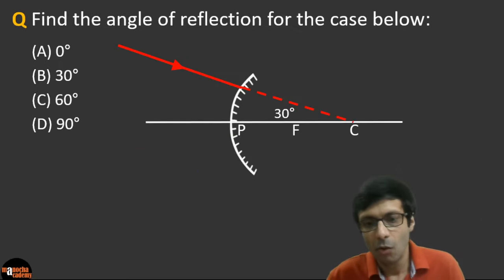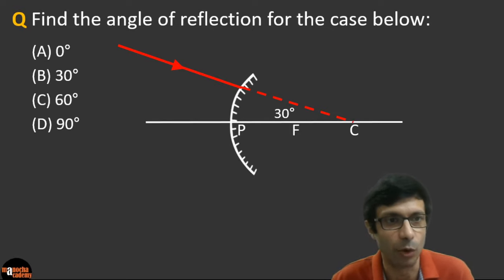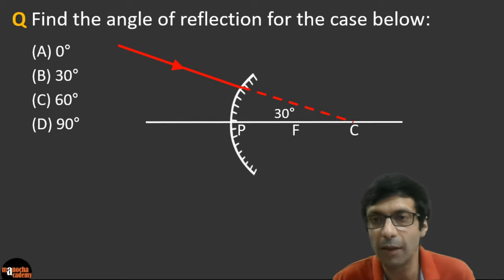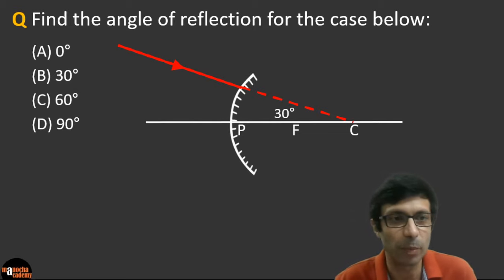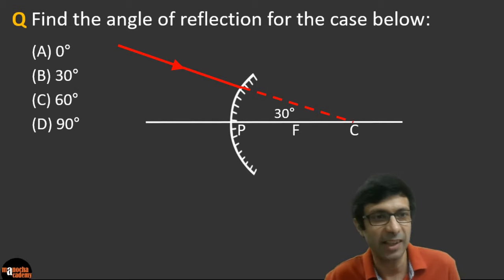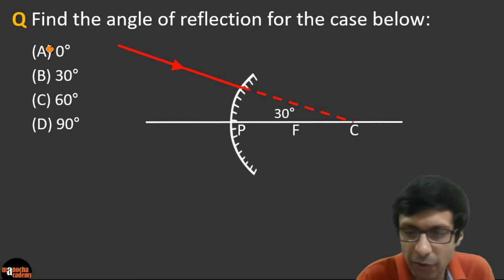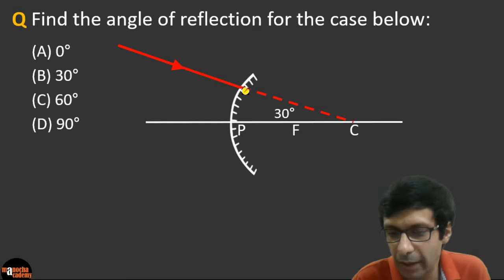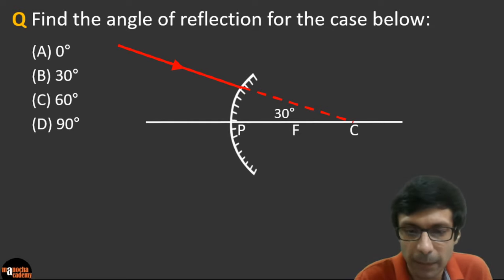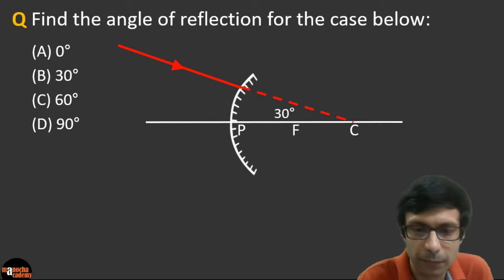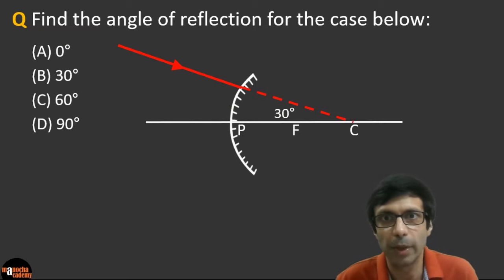Next question: Find the angle of reflection for the case below. Can you see we have a convex mirror here? The ray is incident on the convex mirror and it's directed towards the center of curvature — and this angle here is 30 degrees. What is going to be the angle of reflection?